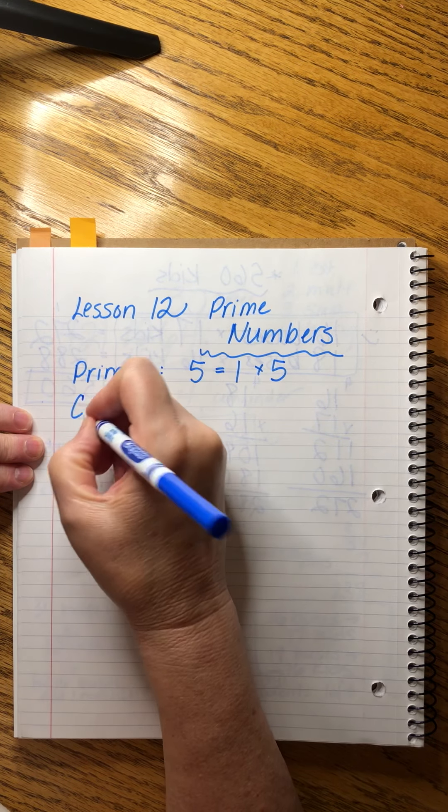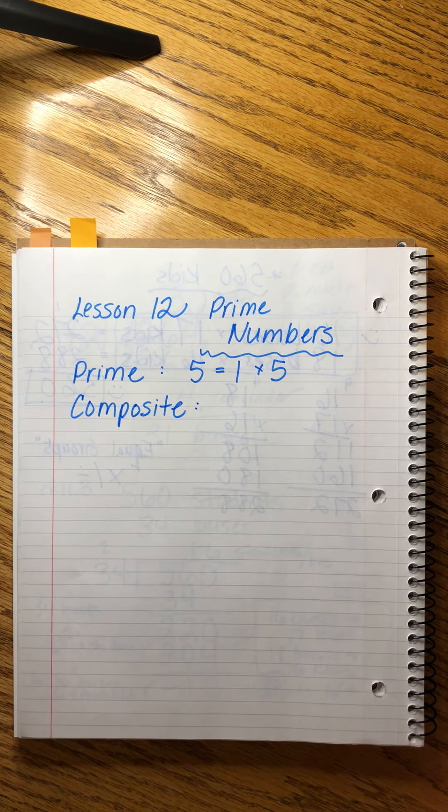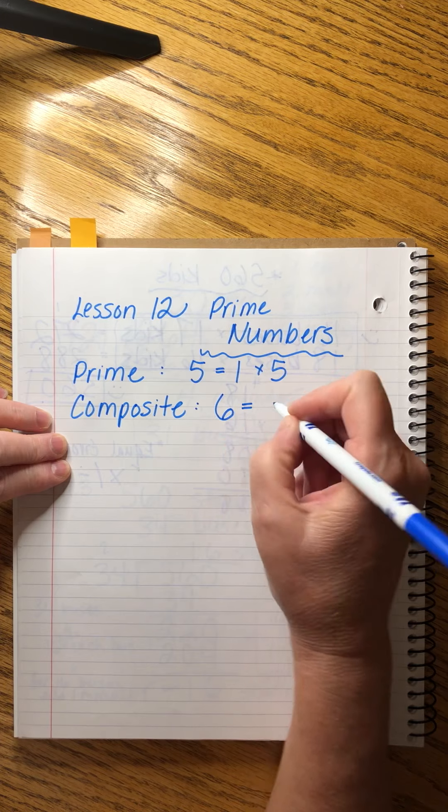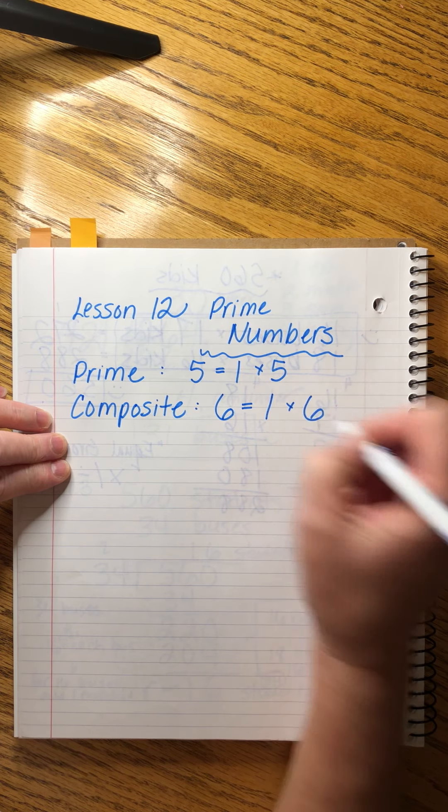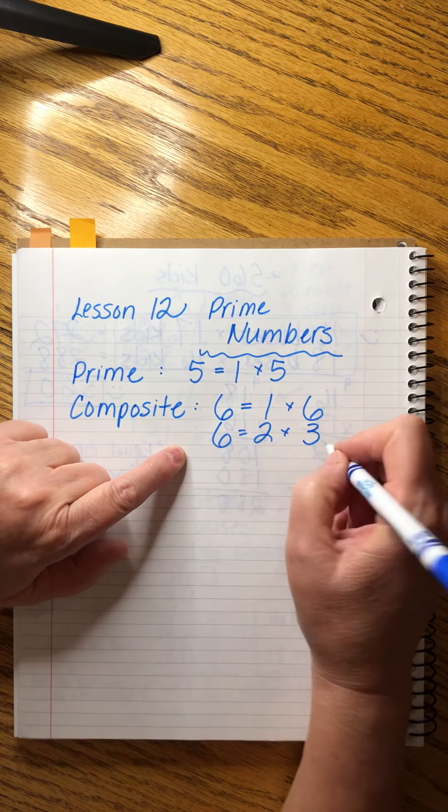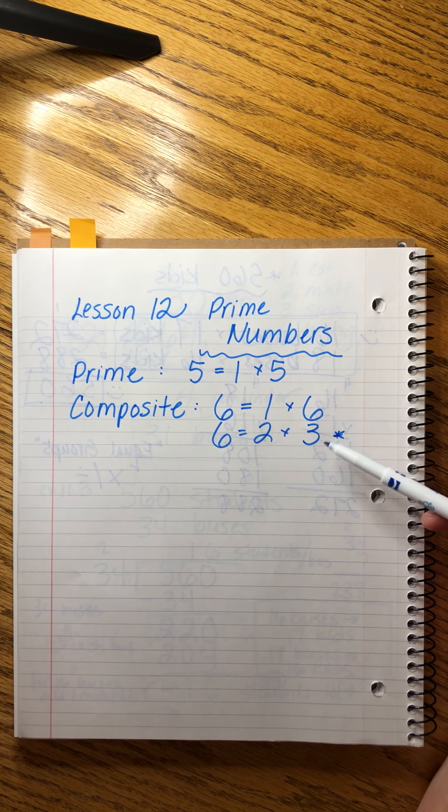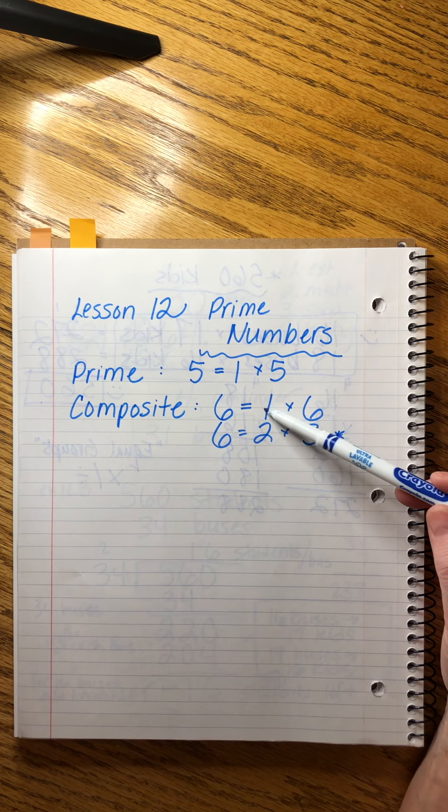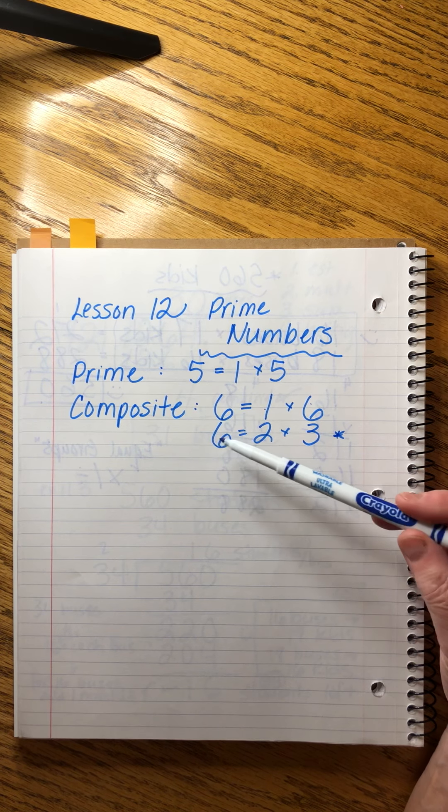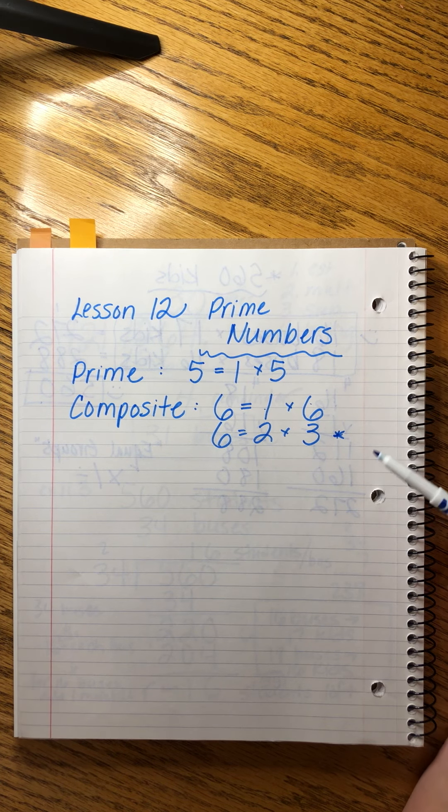The opposite of prime is called composite. Something that's composite means it's made up of other things. A great example of a composite number is six because yeah, we can do one times six, but we can also do six equals two times three. This makes it a composite number—we can find other factors besides just one to multiply together in order to get that number.